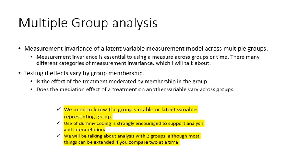There are two main areas of multiple group analysis. One is testing for measurement invariance of a latent variable measurement model using multiple groups. Measurement invariance is essential to using a measure across groups or across time. There are four main categories of measurement invariance, which I will talk about a little bit later. The other is testing for differences in results by group, basically looking at using the group variable within the analysis.